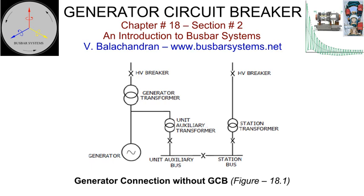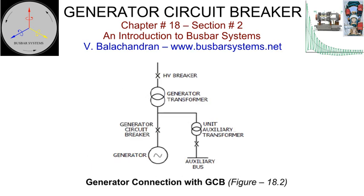For a plant where the generator is directly connected to a generator transformer, the auxiliary load is fed initially through a station transformer connected to the switch yard. Once the generator is synchronized to the grid through a circuit breaker on the high-voltage side of the generator transformer, and its unit auxiliary transformer is energized, the unit auxiliary load is transferred from the station bus to the unit auxiliary transformer bus for continuous operation. Such a scheme requires a bay comprising isolators, breakers, and instrument transformers in the switch yard. When a generator is connected to the generator transformer through a generator circuit breaker, the unit auxiliary transformer is energized through a back-feed from the generator transformer. The generator is synchronized by the generator circuit breaker at generation voltage, thereby avoiding a need for a station transformer and its associated bay in the switch yard on the high-voltage side and switchgear on the medium-voltage side.